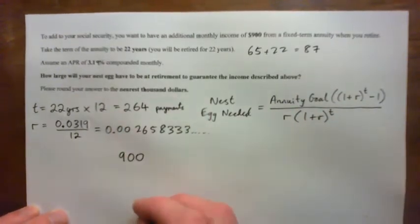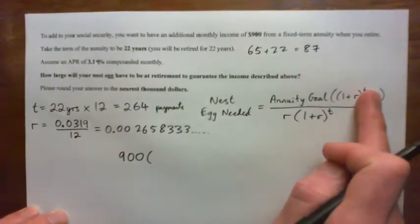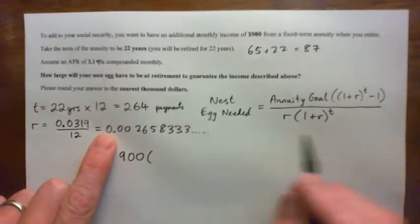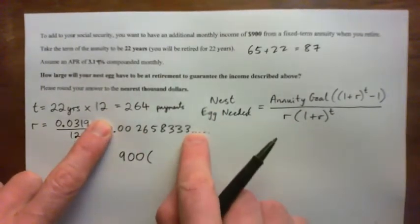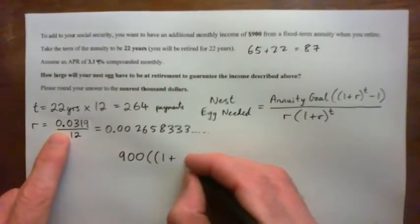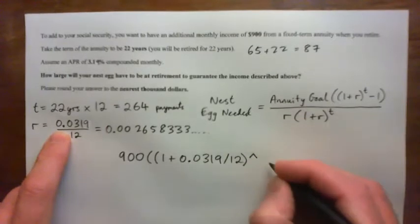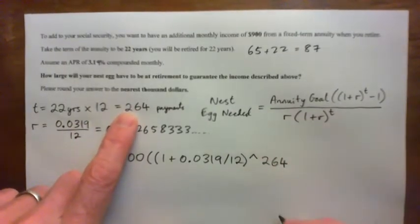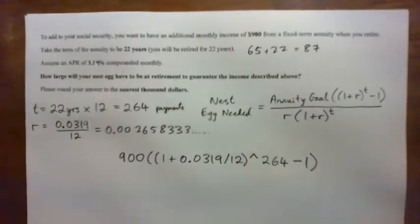So, we take our annuity goal of 900 and multiply that by 1 plus r to the power of t. Now, if I was doing my 1 plus r, I could just go like 1 point that and then put that thing to the power of t. But I'm going to do parenthesis, 1 plus, and I'm going to take this guy, 0.0319 over 12, and then put him to the power of t, 264. See that? Then I'm going to subtract 1. And that's the top.